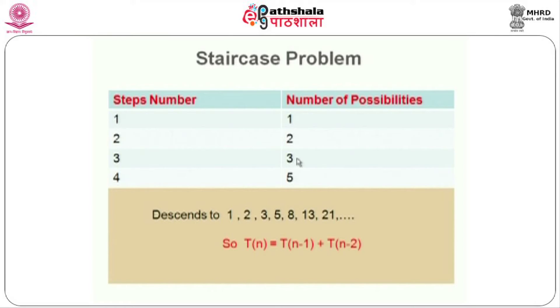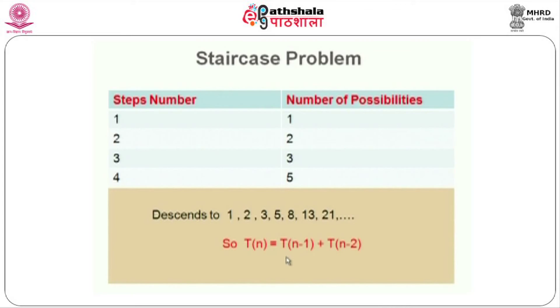For 3 steps it is 3 and for 4 steps it becomes 5. Keeping on enlarging this, the sequence becomes 1, 2, 3, 5, 8, 13, 21 — you can observe the similarity with the Fibonacci series. For example, 8 is computed by adding 3 and 5, and 21 is obtained by adding 8 and 13. Therefore, the staircase problem has the same recurrence relation as the Fibonacci series: T(n) = T(n-1) + T(n-2).